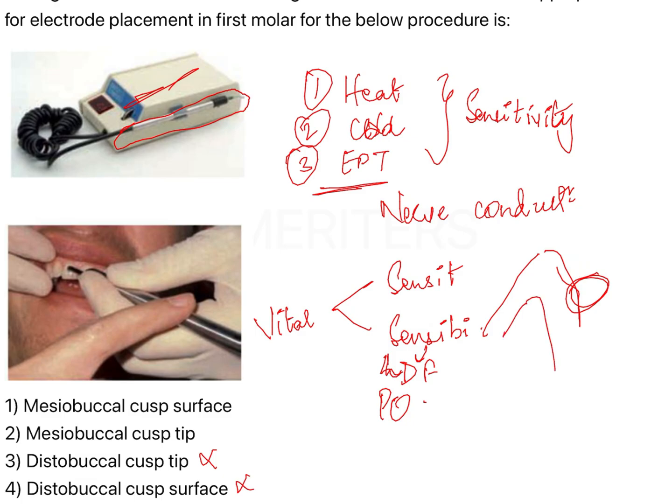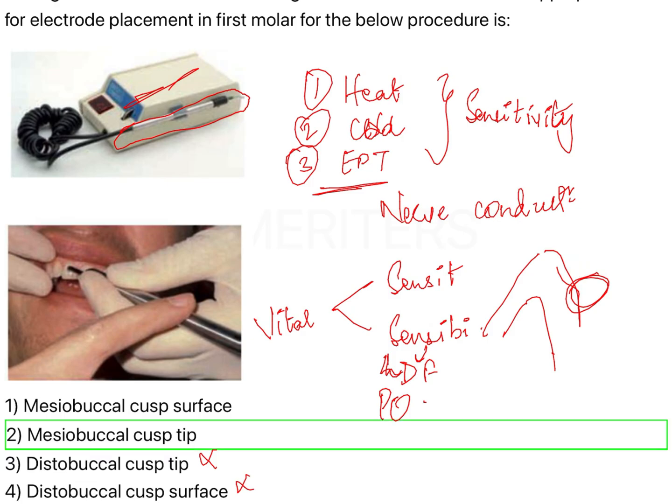Between the remaining options, knowing the anatomy is key: the cusp tip has the thickest enamel compared to all other portions. This is why the electrode should always be placed at the cusp tip — it is a reliable indicator and gives a good response to determine whether the pulp is vital or non-vital.